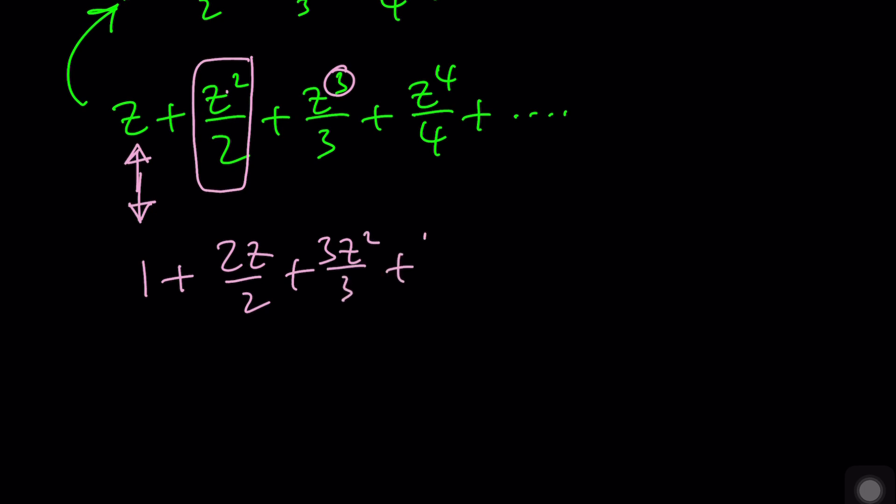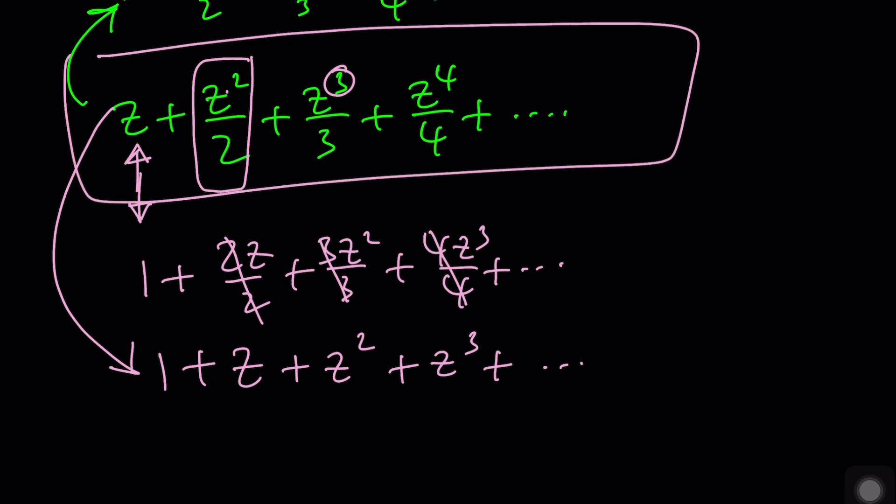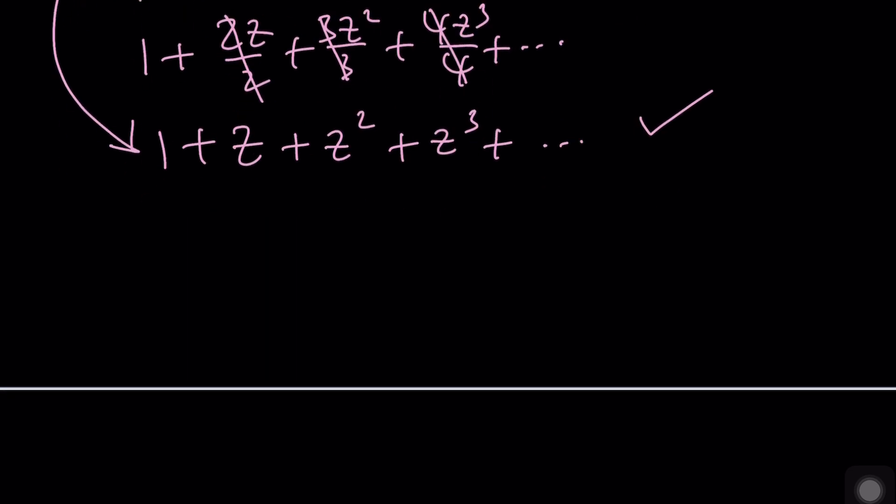You know what that means? If the derivative of this expression is this one, then I can find this expression by integrating this one. Make sense? In other words, z plus z squared over 2 plus z cubed over 3 dot dot dot is the integral of 1 plus z plus z squared dot dot dot dz. Of course our integrand is also going to be an infinite sum. Great.